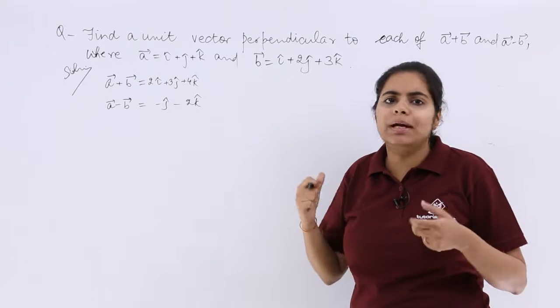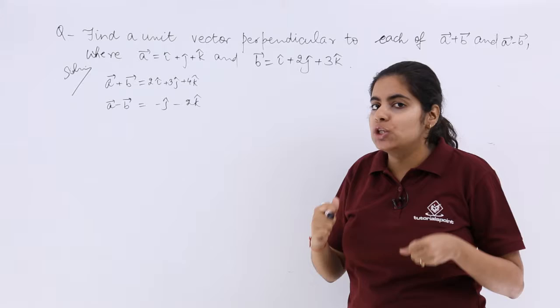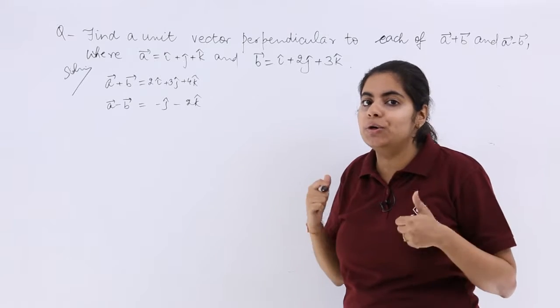Now a plus b is known, a minus b is known. What is left? You have to find out the cross product in order to get the unit vectors.